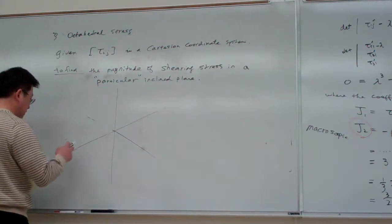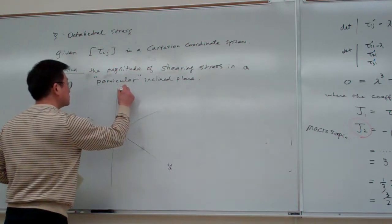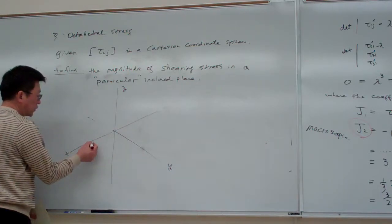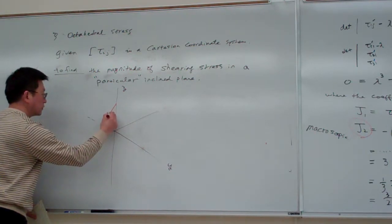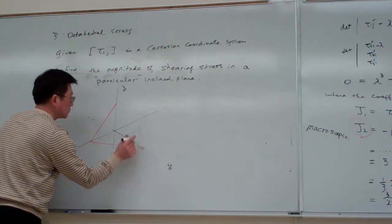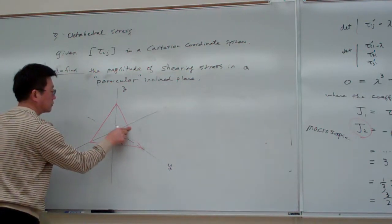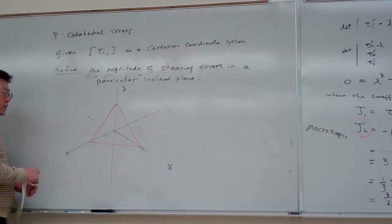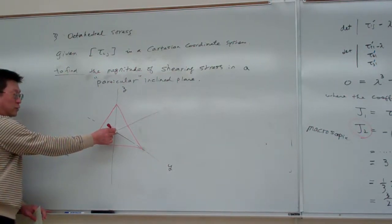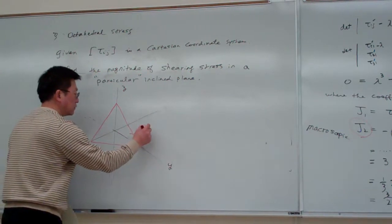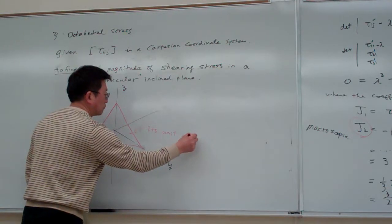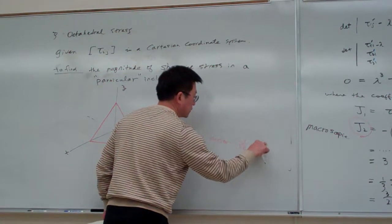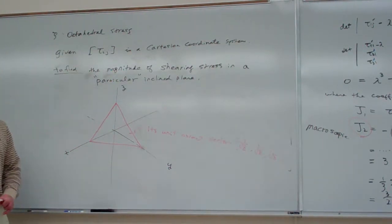Here, for example, this is the x1 direction — say x, y, z. The inclined plane in the first quadrant is this: taking the equal amount from the three axes and then drawing the plane. For this inclined plane in the first quadrant, it has the normal unit vectors pointing in that direction.